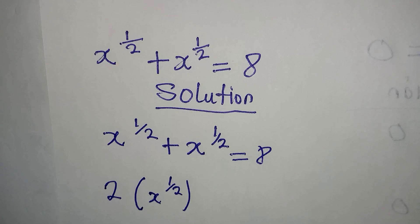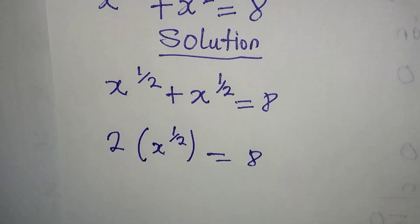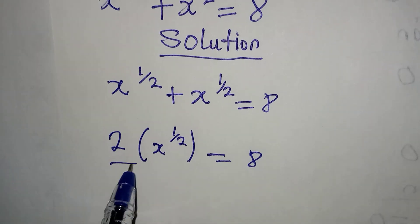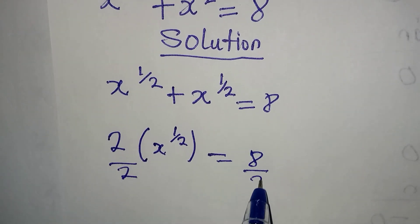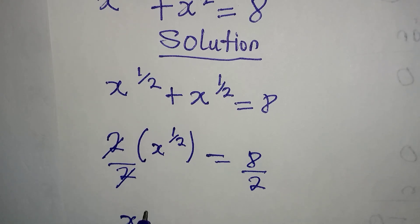This means that we have 2 of x to the power of 1 over 2, and this is equal to 8. This is very simple. We can divide by 2 and divide this by 2 so that this and this will go.